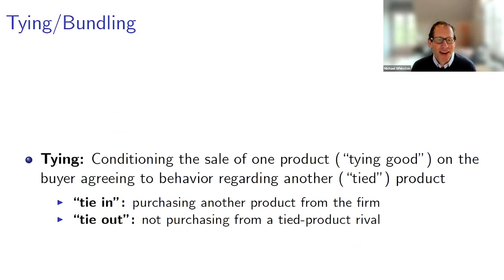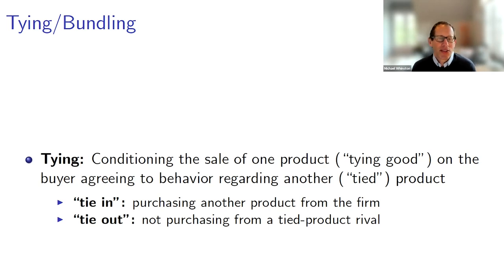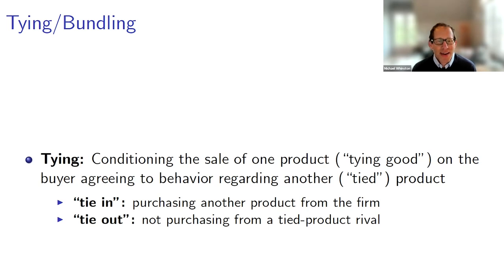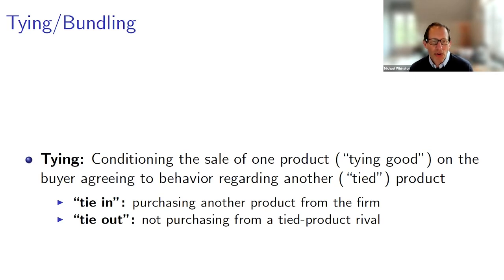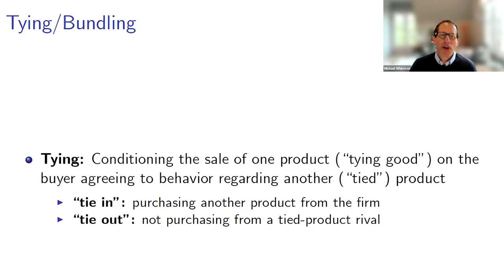I'm going to start with just a couple of slides on tying. I think most of this audience will be familiar with these things, but it will make sure we're all on the same page. So what do we mean by tying? Tying involves conditioning the sale of one product — called the tying good — on a buyer agreeing to behavior regarding another, quote, tied product. Tying contracts can take a couple of different forms.